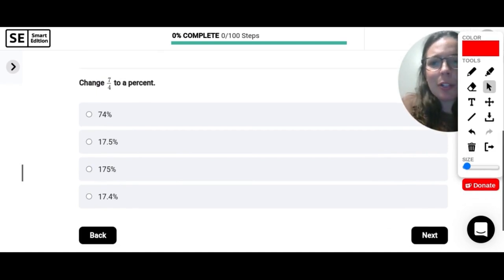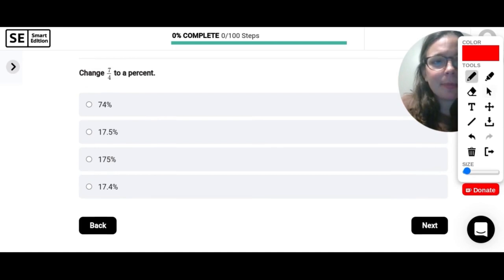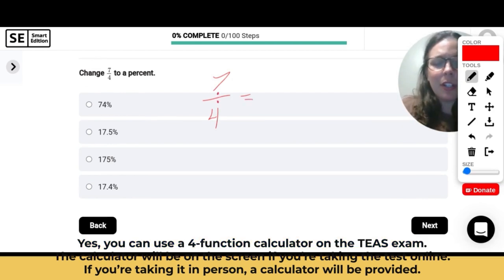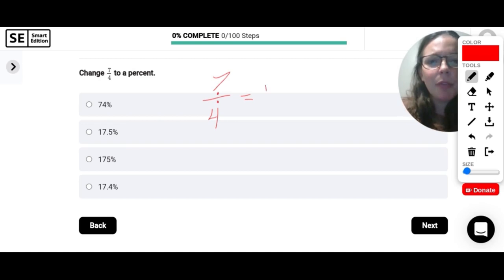Let's change 7 quarters to a percent. So when we have a fraction, we want to turn it into a percent. A good first step is to go from a fraction to a decimal. So fractions really are just division. So 7 divided by 4 would give me 1.75. Now to turn this into a percent, swoop the decimal to the right twice. So 175%.